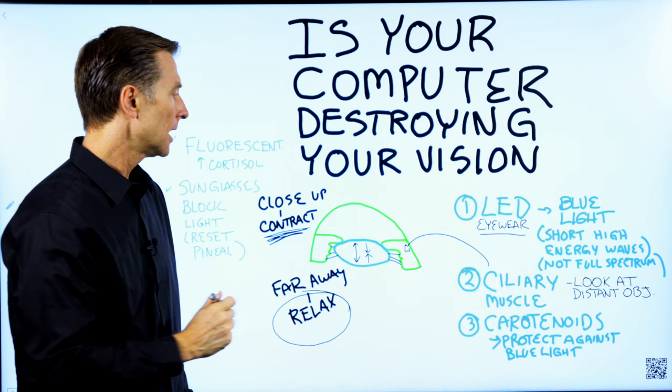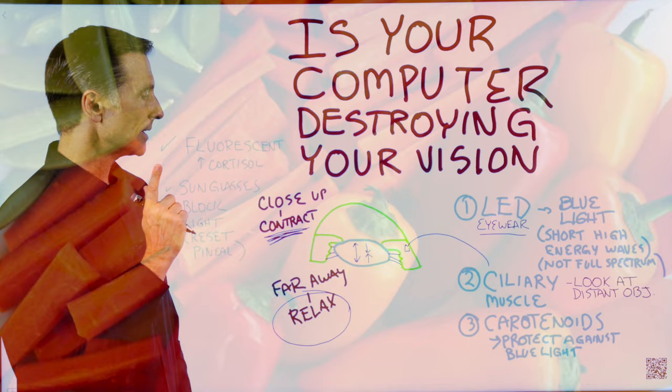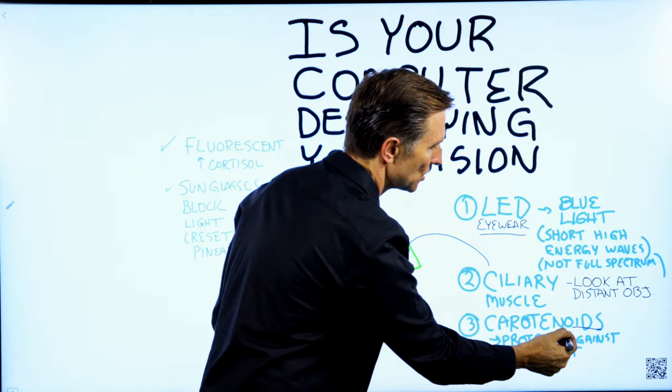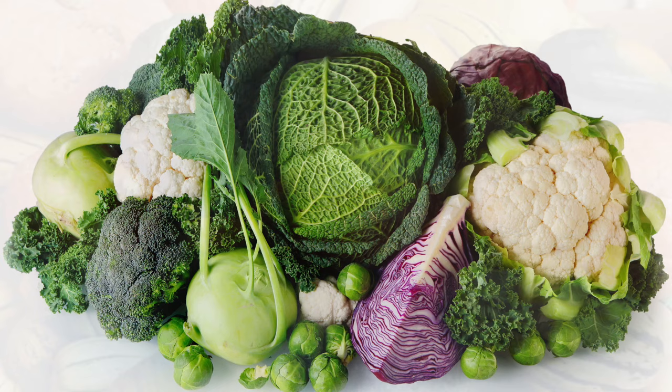The last point I want to bring up is carotenoids. Carotenoids are phytonutrients. There's certain pigments in certain colored vegetables. Cruciferous. It's in squash. It's also in egg yolks.